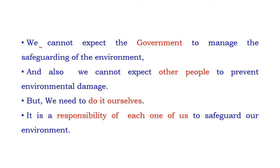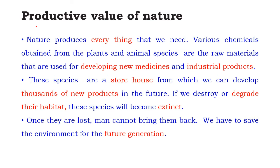We cannot expect the government alone to safeguard the environment. The government can create rules, regulations, and laws to protect the environment, but it is the duty of the people to follow them. We also cannot expect other people to prevent environmental damage. It is the responsibility of each and every one of us to safeguard the environment and save it for future generations.